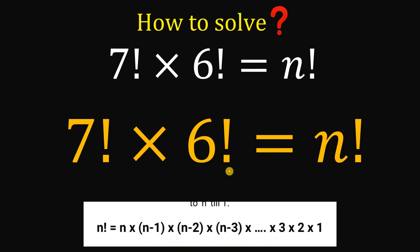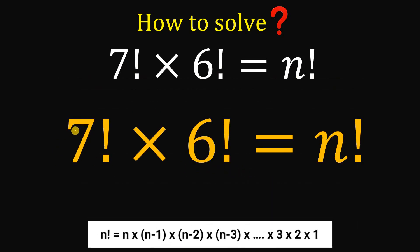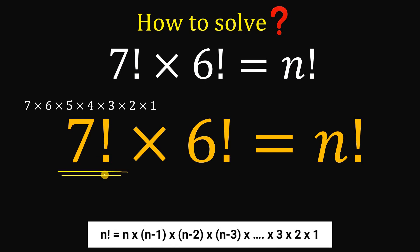Now, 7 factorial — if we think about it — is just 7 × 6 × 5 × 4 × 3 × 2 × 1, using the definition of factorial.